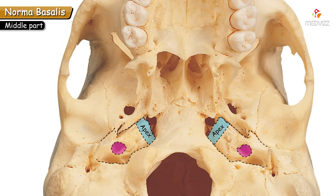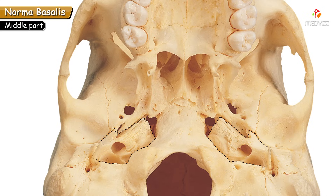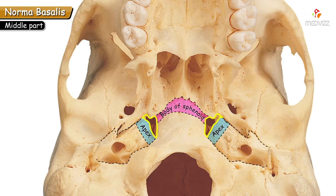The foramen seen in the petrous part is the carotid canal, which transmits the internal carotid artery along with its sympathetic plexus — the artery supplying the major part of the brain. The gap between the body of the sphenoid and the apex of the petrous part of the temporal bone is the foramen lacerum, which has irregular margins.